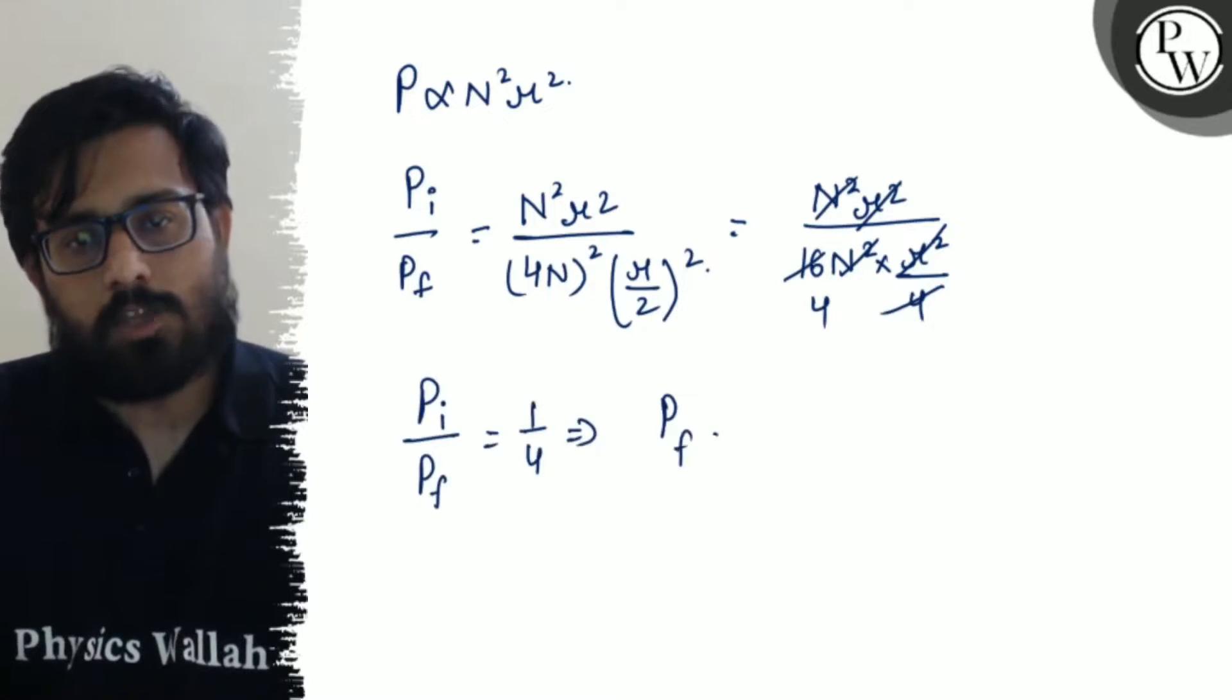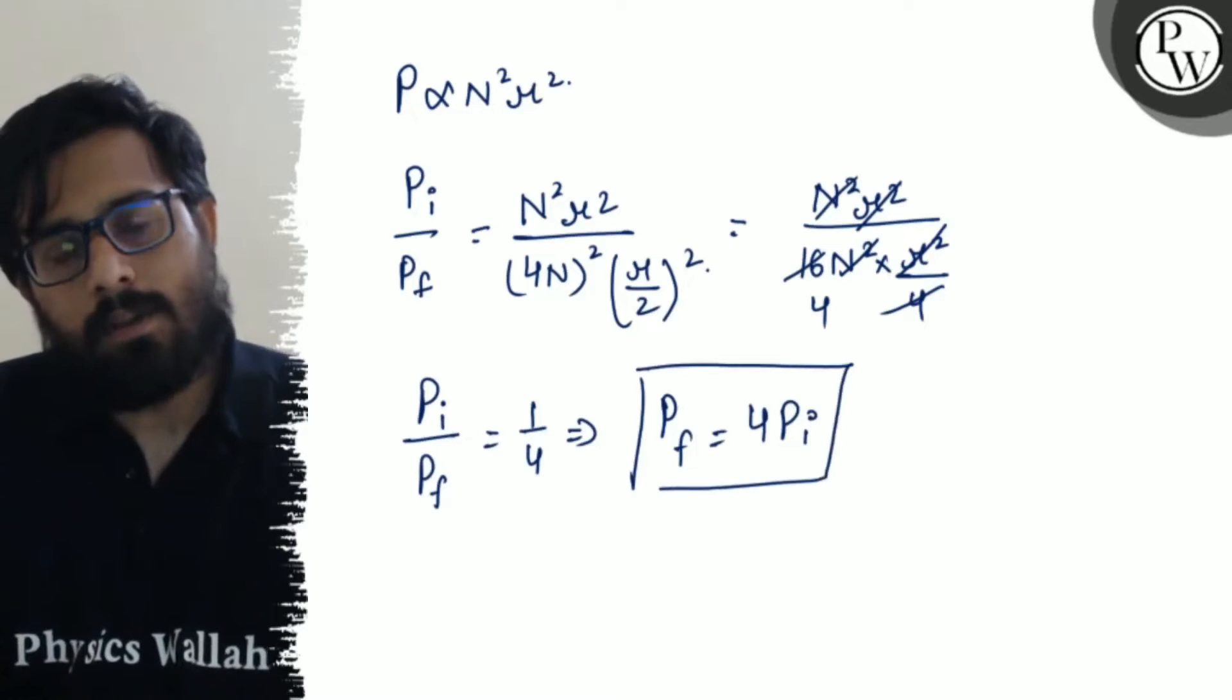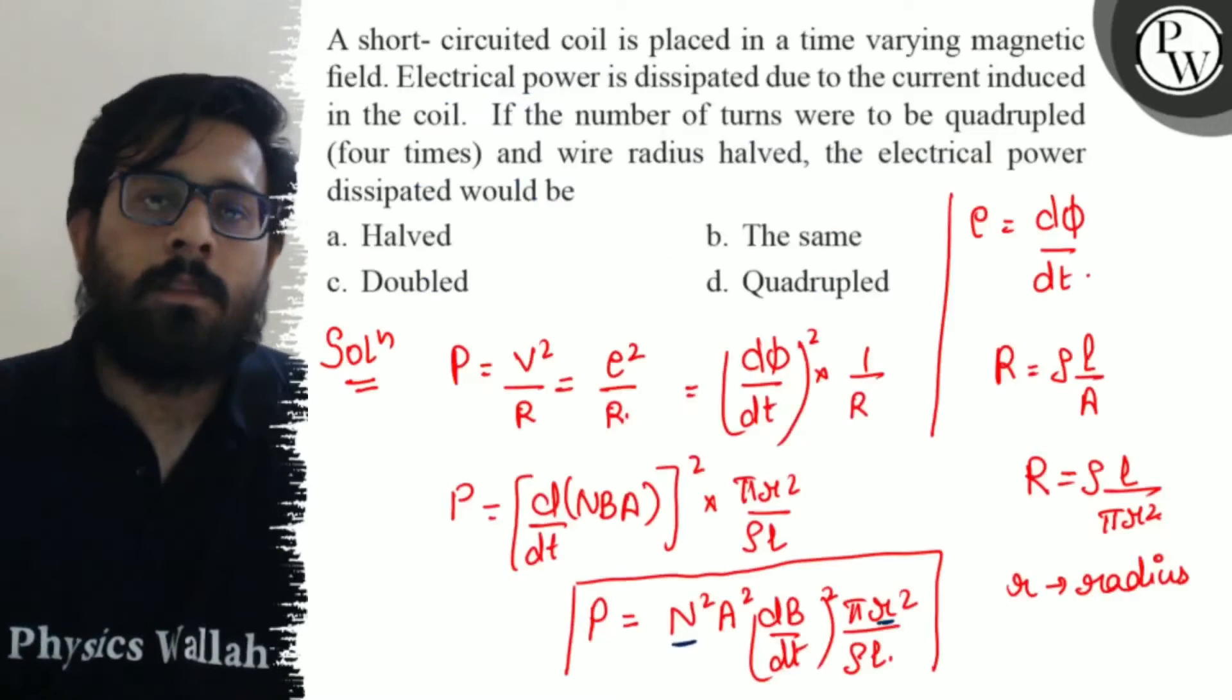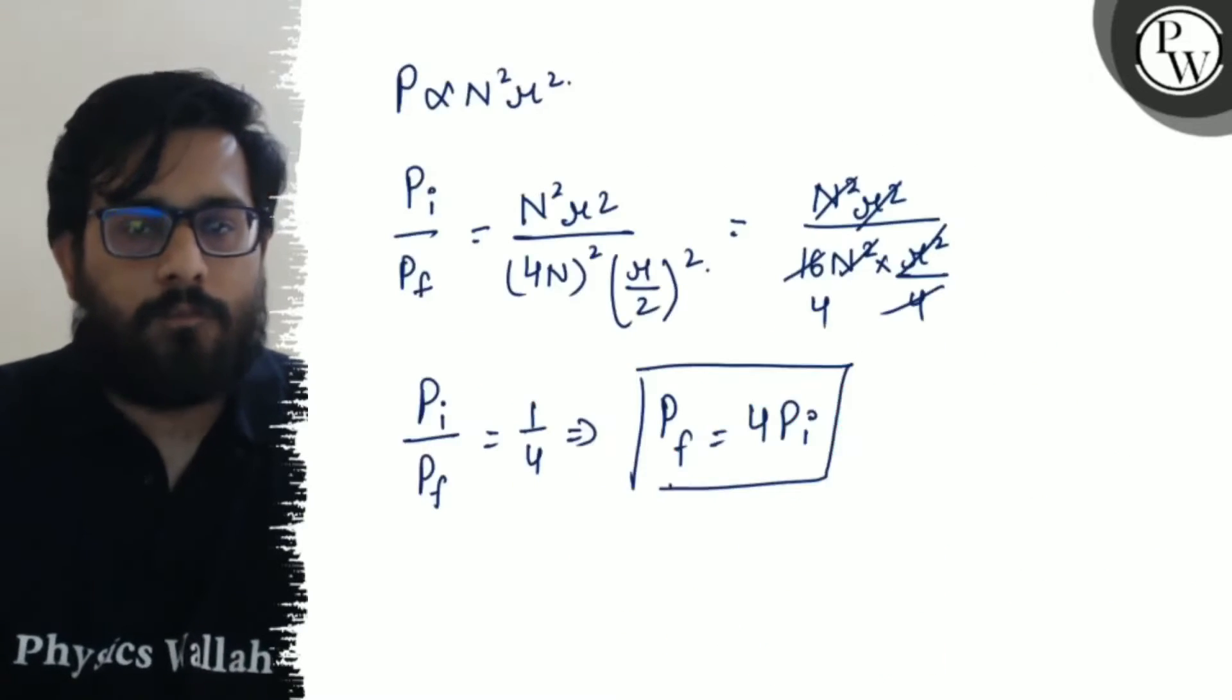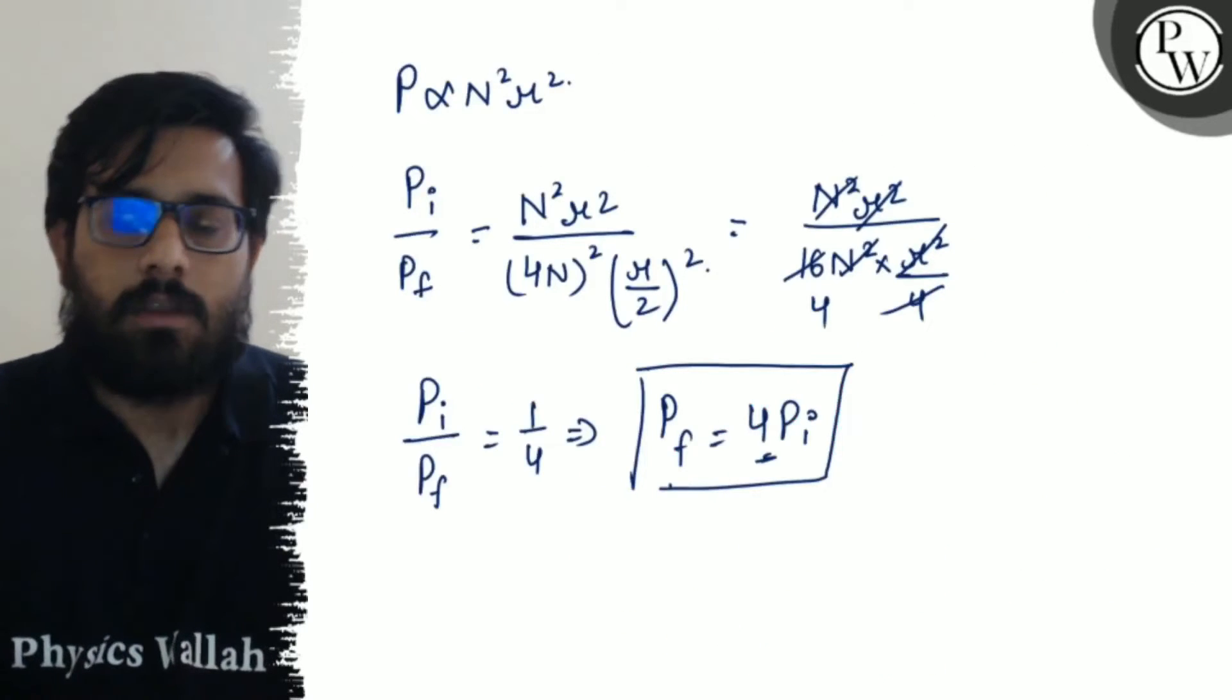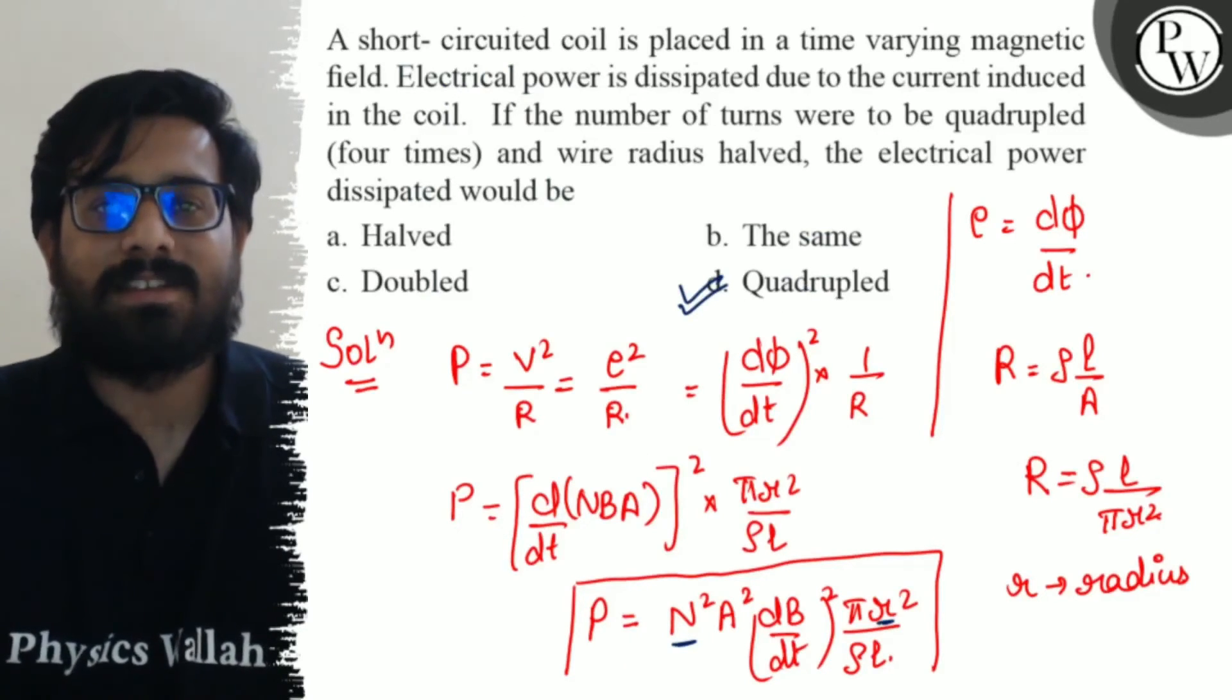So your final power comes to be 4 times the initial power. That means the final power is actually quadrupled. Then the final electric power comes to be 4 times the initial power. So your final option is D, quadrupled, which is your final answer. I hope you got the concept of this question. All the very best.